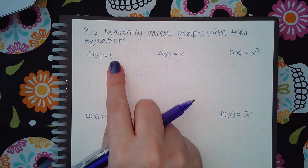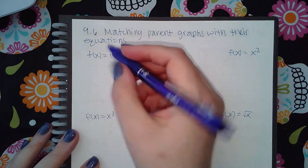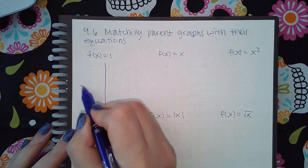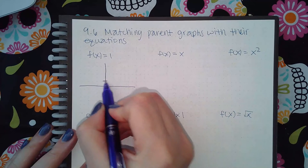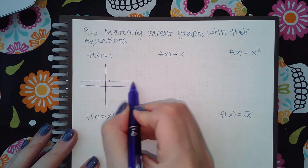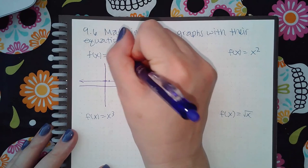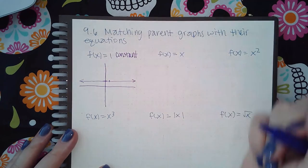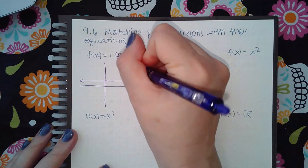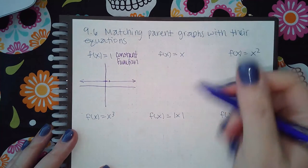This graph f(x) equal to a number looks like a horizontal line at that particular number. In this case the number is 1, and this is what we call a constant function.